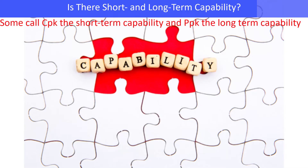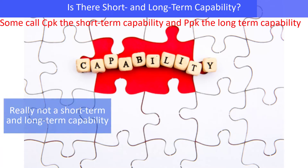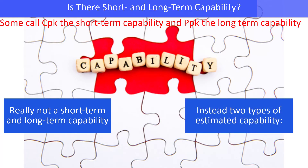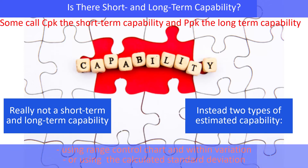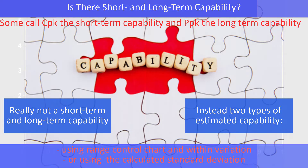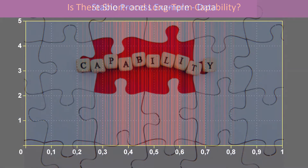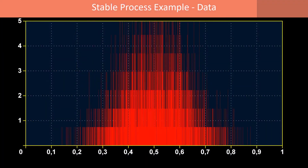Is there a short and long term capability? Sometimes CPK is called the short term and PPK is called the long term. But there's really not a short term and long term capability. Instead, there are two types of estimated capability: one that uses the range control chart and the within variation to calculate sigma, and the other uses the calculated standard deviation.